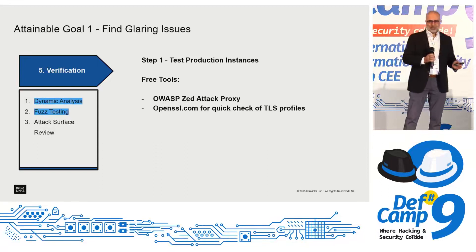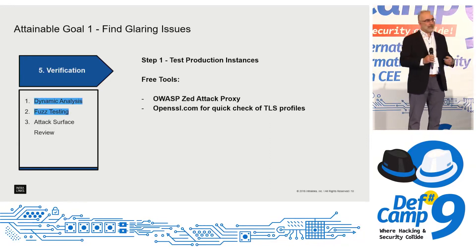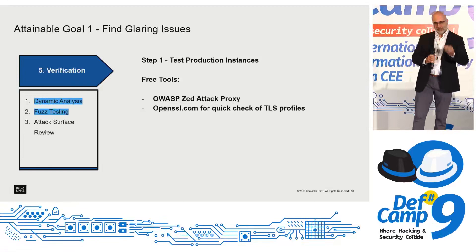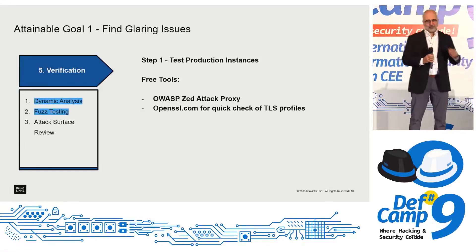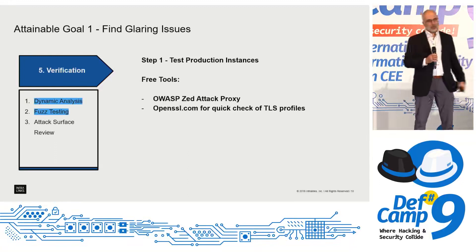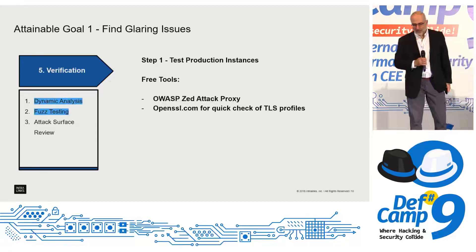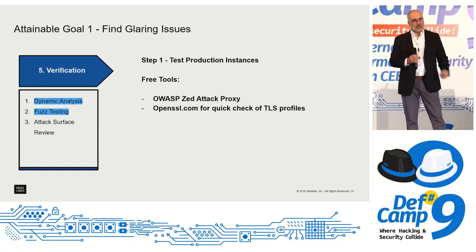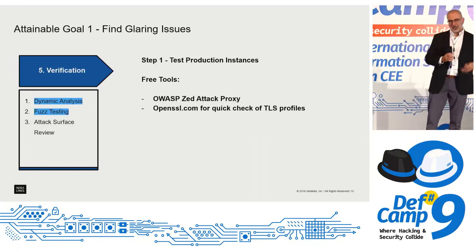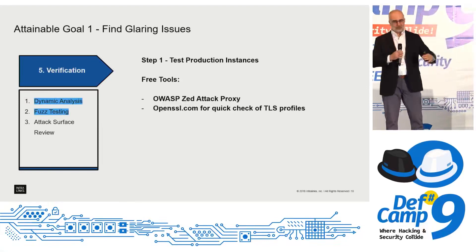As a first attainable goal: find your glaring issues first. For that you don't need to hire anyone — you can get free tools. Get the OWASP ZAP proxy; it's pretty trivial to set up, and a few smart engineers can figure out how to find a SQL injection on a login page. You better find it yourself before anyone else does. If you're a startup, you're lucky because usually customers are the first to find it, not attackers — but you can only ride that luck for so long.